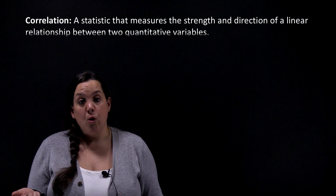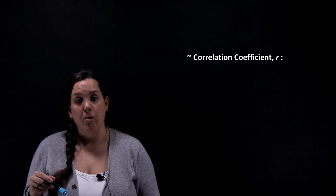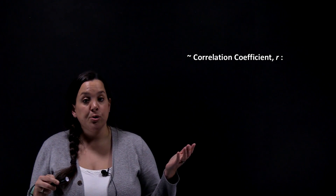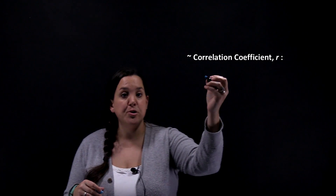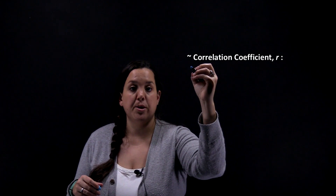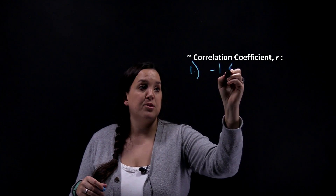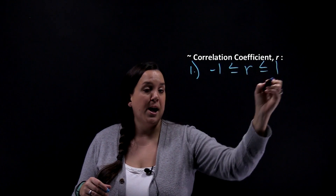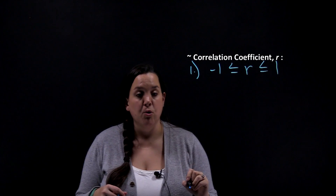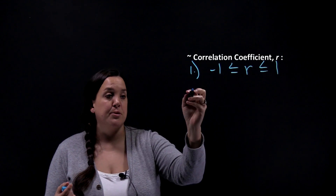When we think about a correlation coefficient, the notation or symbol we use to represent it is going to be the lowercase r. Correlation coefficients have five rules connected to them. The first rule is that the correlation coefficient must be between the two values negative one and positive one — r will always be between negative one and positive one.